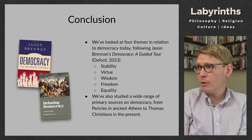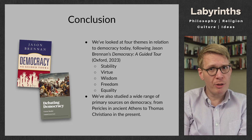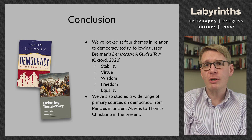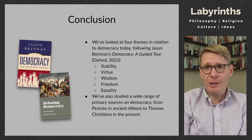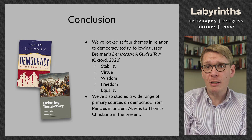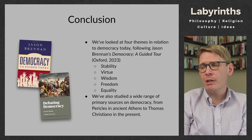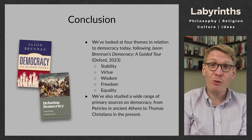We started by looking at five themes in relation to democracy today, following Brennan's book published by Oxford in 2023: stability, virtue, wisdom, freedom, and equality. Brennan set it up as for and against, and we saw that in each of these areas throughout history there has been a lot of energy on both sides of those debates. Plato emerges as a consistent opponent of democracy — what he calls mob rule — whereas thinkers like Lysander Spooner and Thomas Paine are champions of democracy. In the middle, you have someone like Tocqueville, who sees both the inevitability and desirability of democracy, yet also sees the threats that democracy can pose — including his idea of despotism and the tyranny of the majority.